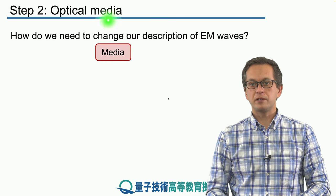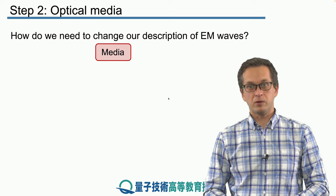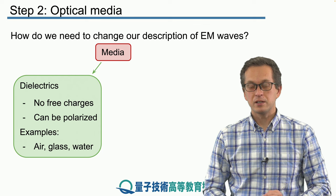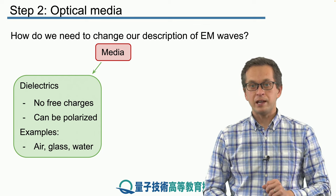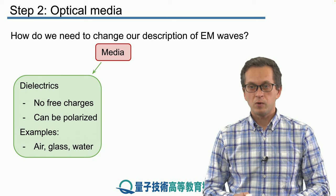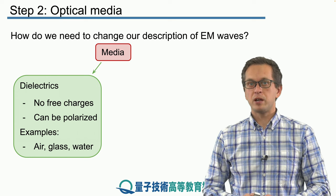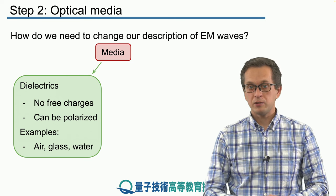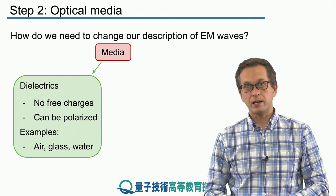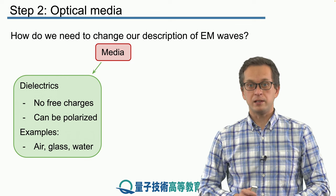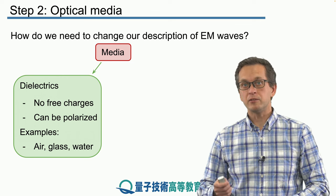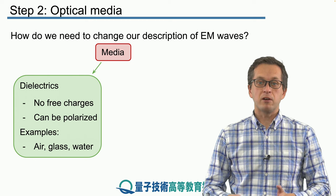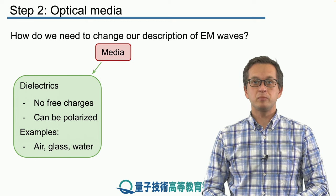There are two different categories of optical media we will consider. On one hand, we have dielectrics. The main property of dielectrics is that there are no free charges. This simplifies Maxwell's equations considerably and makes our calculations easier. An interesting property of dielectrics is that we can use them to polarize light, which will be a direct consequence of Fresnel equations. Examples of dielectrics are air, glass, and water.